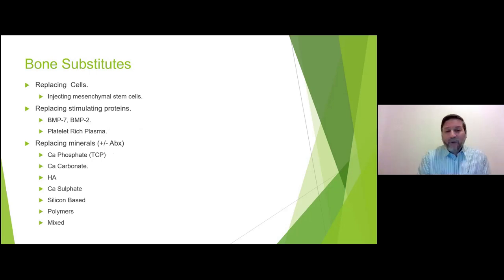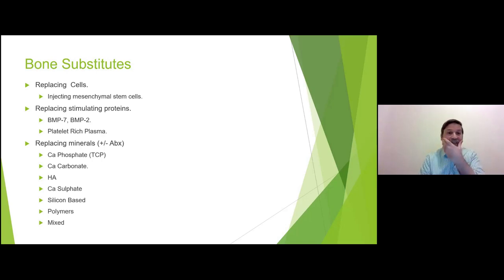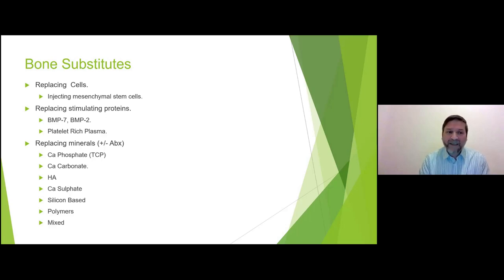Bone substitutes can be divided by what they replace. To replace cells, you can inject mesenchymal stem cells — this has been tried but is expensive and not a common practice in any hospital I'm aware of. You can replace stimulating proteins like BMP-7 and BMP-2, or inject platelet-rich plasma (PRP). Some places do inject PRP: you take the patient's own blood, spin it at high speed to separate plasma from red cells, and inject the plasma back.